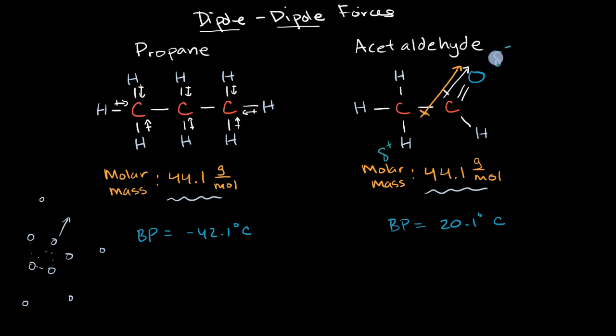And so what's going to happen if it's next to another acetaldehyde? Well, the partially negative end of one acetaldehyde is going to be attracted to the partially positive end of another acetaldehyde. And so this is what people are talking about when they say dipole-dipole forces. We are talking about a permanent dipole being attracted to another permanent dipole. And so acetaldehyde is experiencing that on top of the London dispersion forces, which is why it has a higher boiling point.